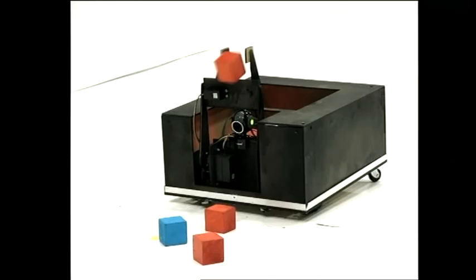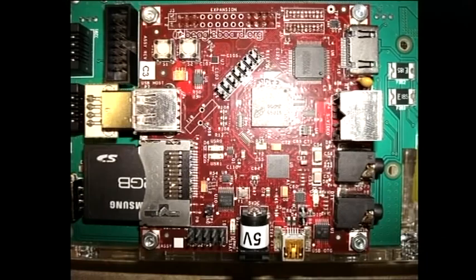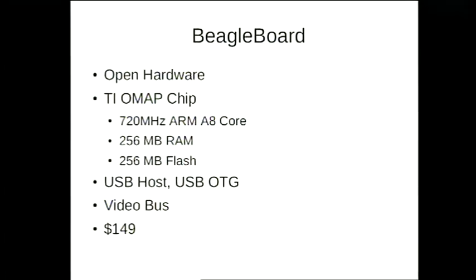With our kit, we could build things that worked. Kit two, which we're in the process of shipping now, is based on the BeagleBoard — which is an open hardware project run by TI. It's got an ARM A8 in it, which is the same processor as in the N900. It's got quite a lot of RAM, quite a lot of flash, USB, and crucially for us, it's got video out. And it's reasonably cheap.